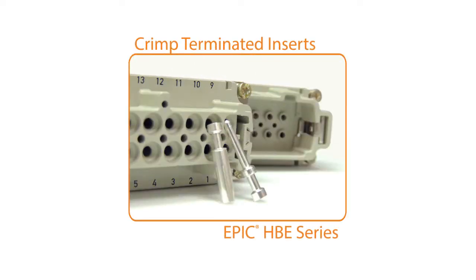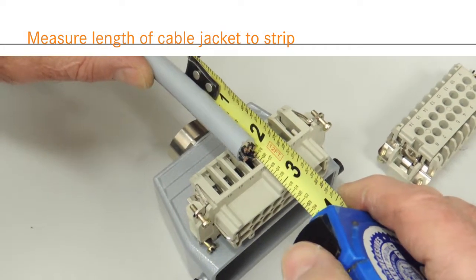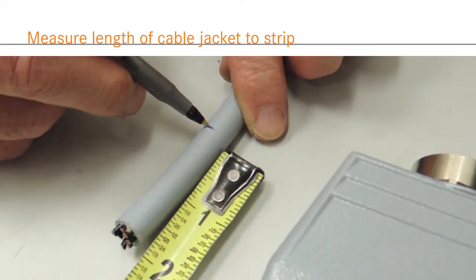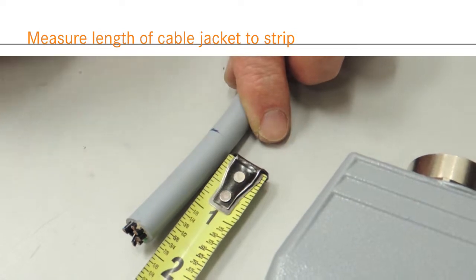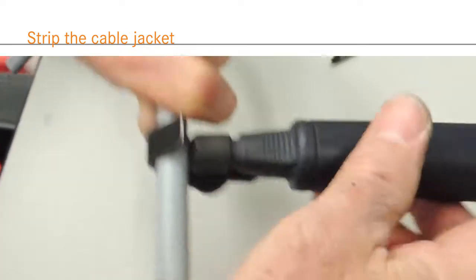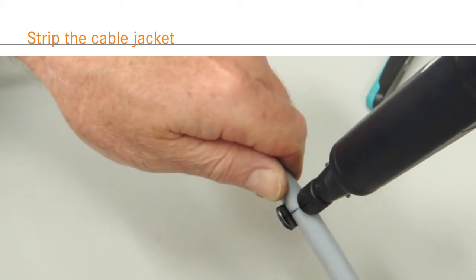First, we will look at wiring crimp inserts. As with every termination, first you must strip the cable jacket to allow you to easily terminate the individual conductors. The jacket should be stripped back enough to allow you to easily terminate the individual conductors, but not so much that the jacket is stripped past the hood's gland when assembled. For the housing shown here, 2 inches is a sufficient stripping length.